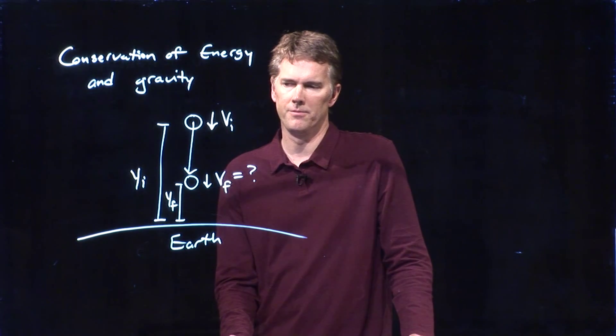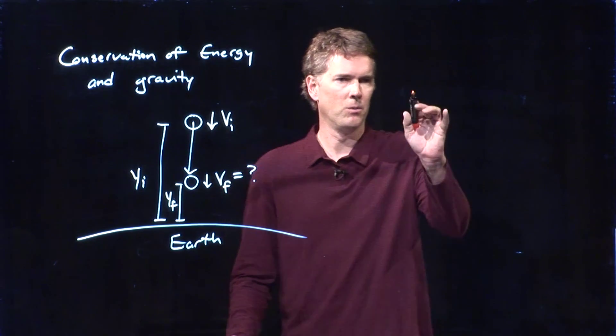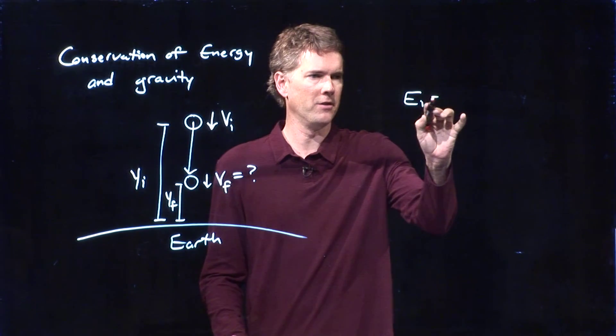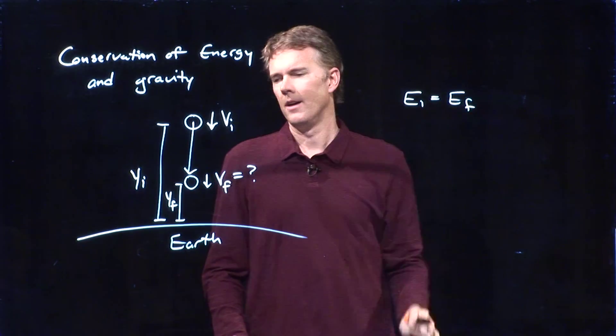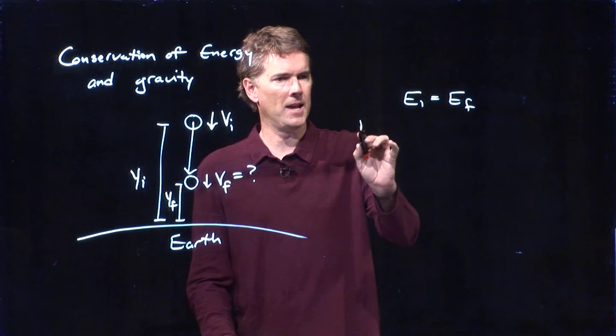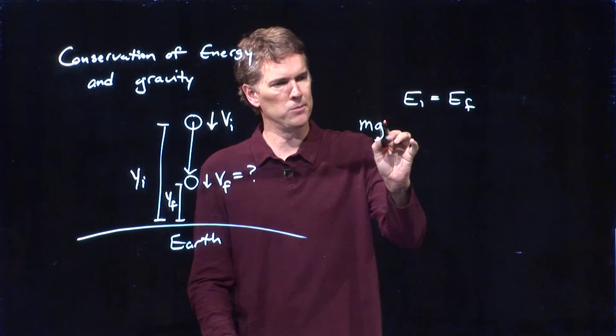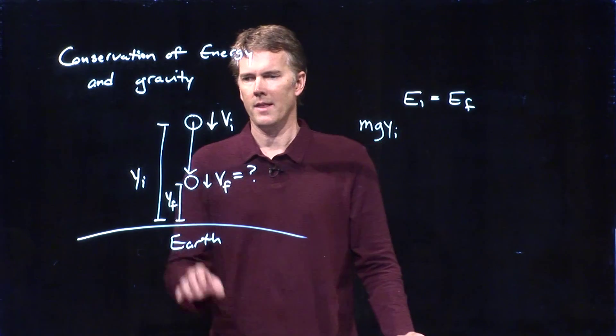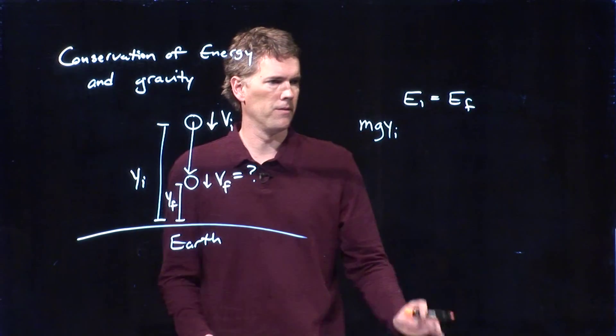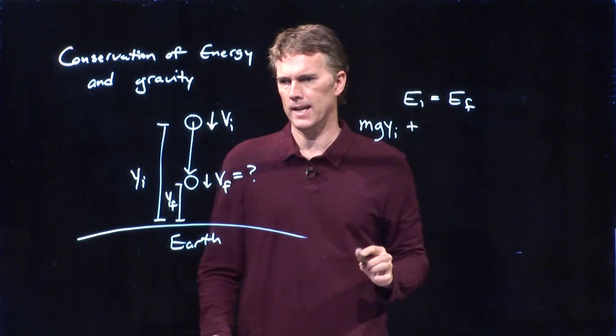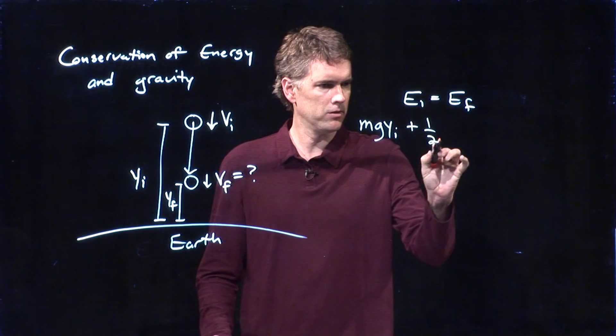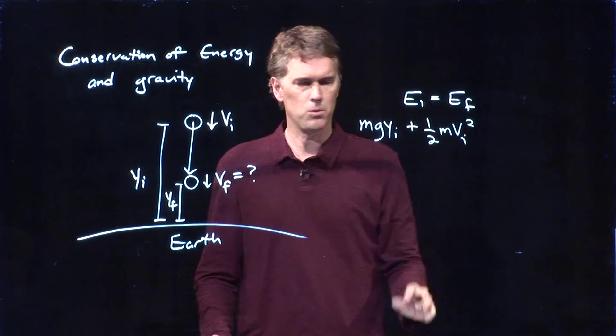All right. How do I do this? Well, we go back to conservation of energy. And we say, all right, we've got mg times y initial. That's our potential energy when we're up there. But we also have kinetic energy now. And I know what that is. It's one half mvi squared.